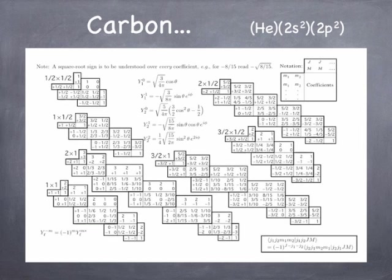The |1,−1⟩ state is both spins down. The |0,0⟩ singlet superposition is |up,down⟩ minus |down,up⟩, with coefficients of 1/√2 and −1/√2. Every coefficient is really square-rooted; there's a little note about that at the top of the table. The total angular momentum states are labeled at the top horizontally, and the individual angular momentum states that go into the superposition are labeled on the side vertically.